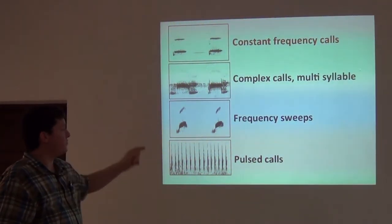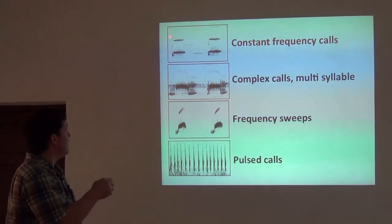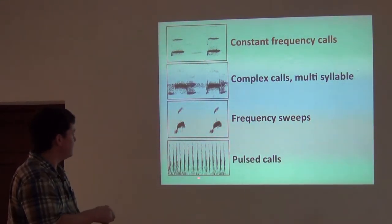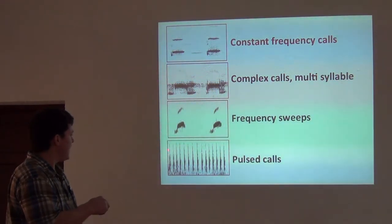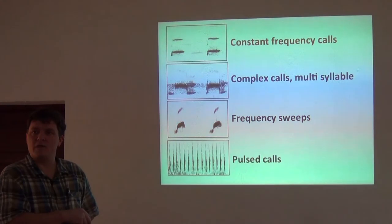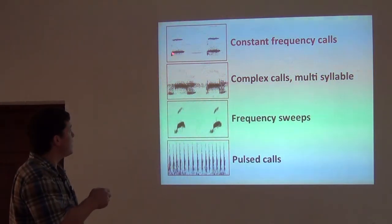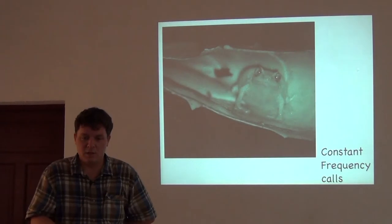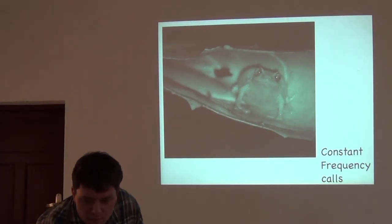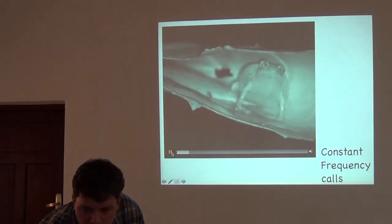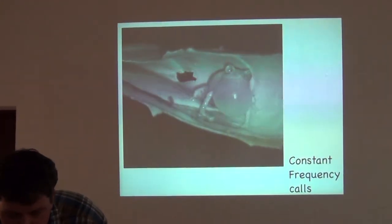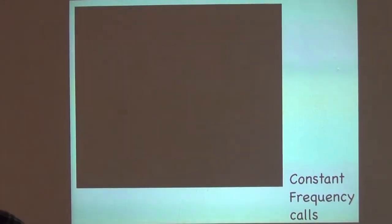I want to show you some examples of frog calls — four categories that are radically different. First, constant frequency calls. This is a sonogram — a graph of the frequency of the frog call versus a two-second time window. The frequency, the pitch of the call, is on the vertical axis. A constant frequency call is one where the frequency doesn't change over the course of the call — it stays at one frequency, about 3.5 kilohertz, right across the whole call.